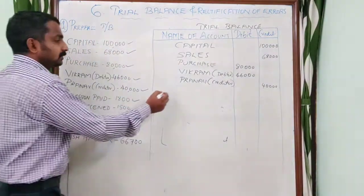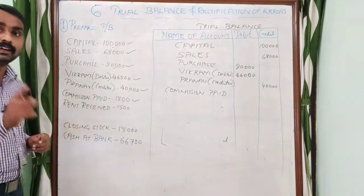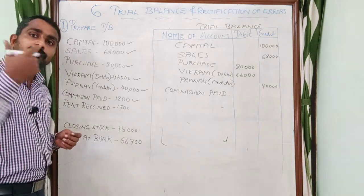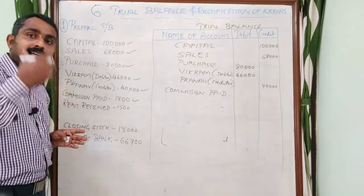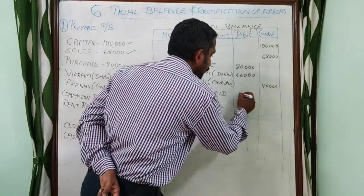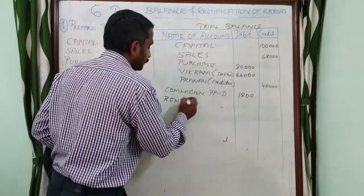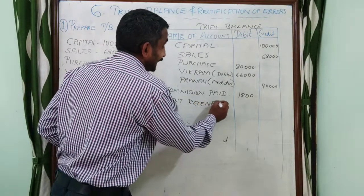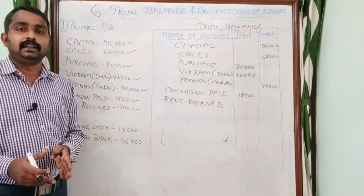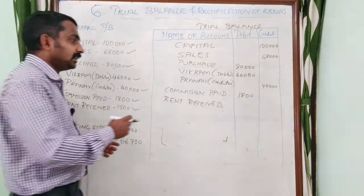Next is Commission paid. Commission paid is an expense, whereas commission received is an income. Expense has a normal balance of debit, so commission paid of 1,800 goes on the debit side. Commission received is an income — indirect income — so its normal balance is credit. Commission received of 1,500 goes on the credit side.